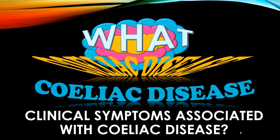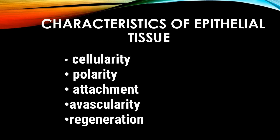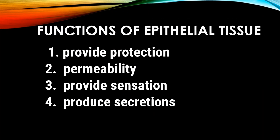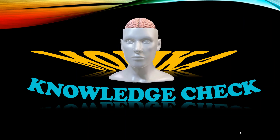Before ending, a question to consider: have you heard about celiac disease? What are some of the clinical symptoms associated with celiac disease? To recapitulate, we learned about the basic appearance of epithelial tissue, classification of epithelial tissue, characteristics of epithelial tissue, and functions of epithelial tissue. In the next video we'll be discussing connective tissue. Thank you for watching — please like and subscribe to the channel.